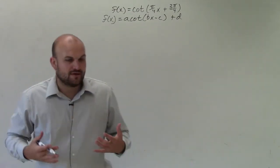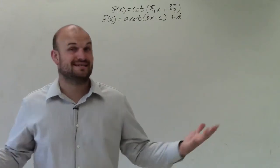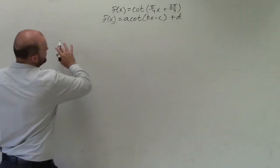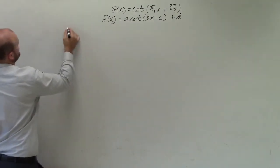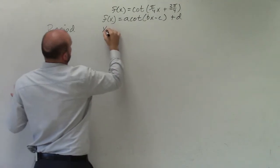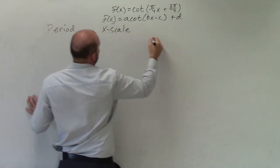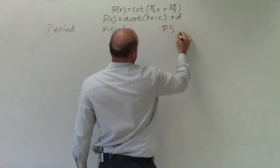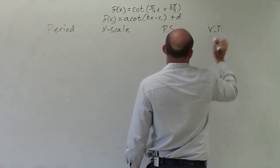To determine that, there's one thing I say is my basis for every time I'm graphing a trigonometric function, is to determine the amplitude, which cotangent does not have amplitude. So we just need to worry about period, x scale, phase shift, and vertical translation.